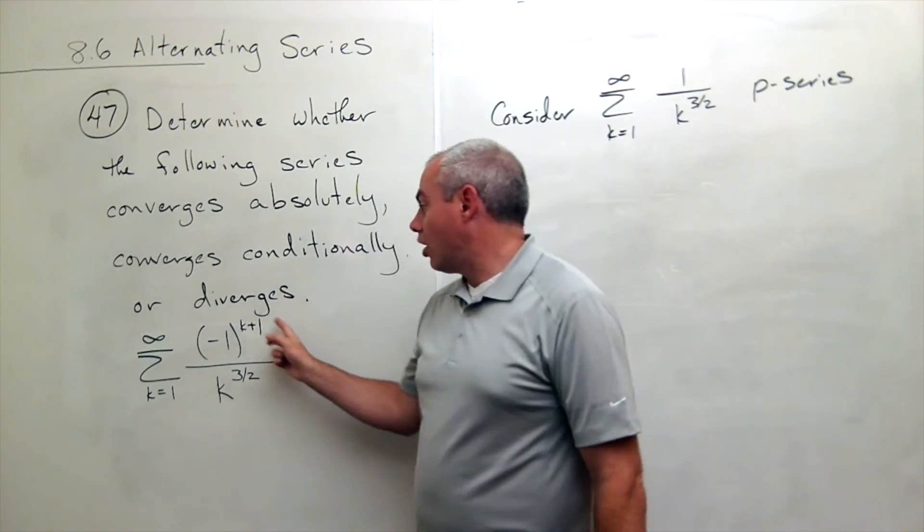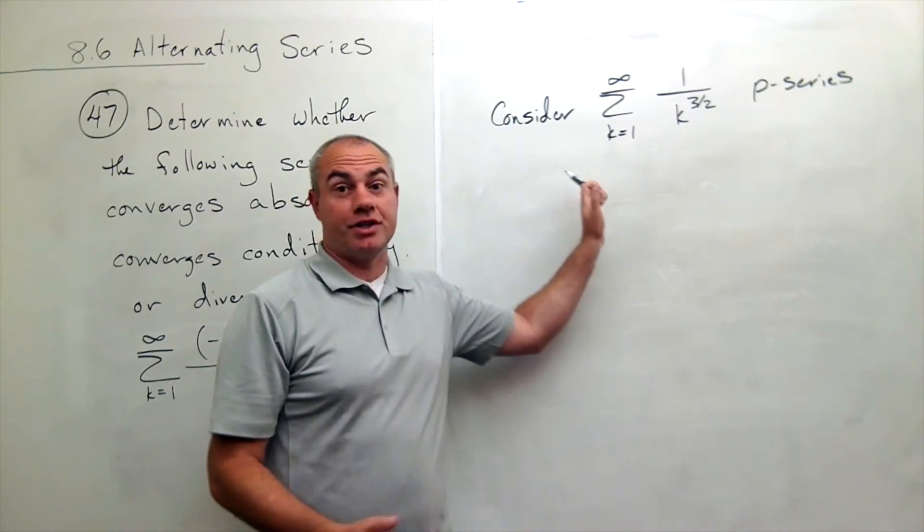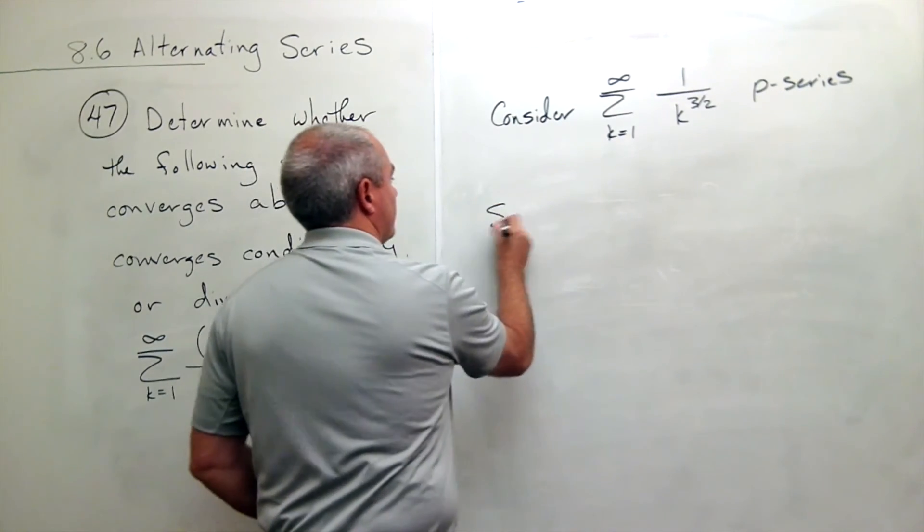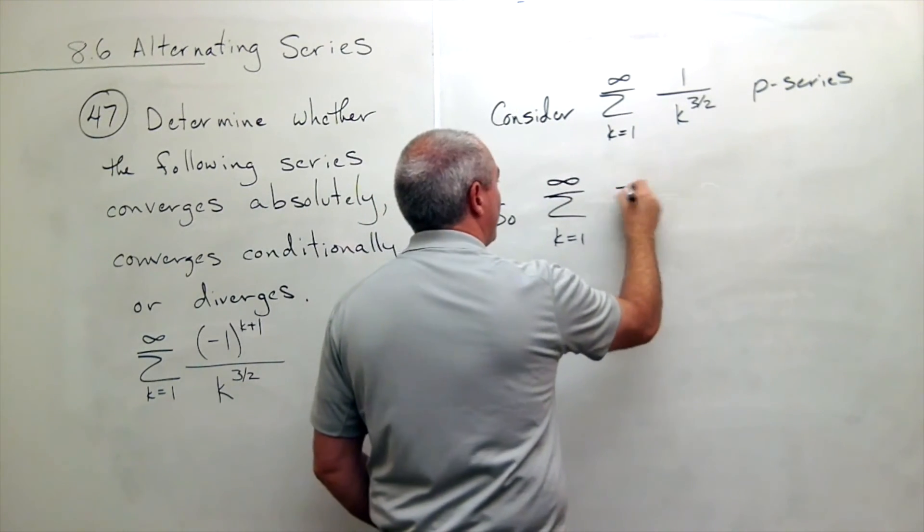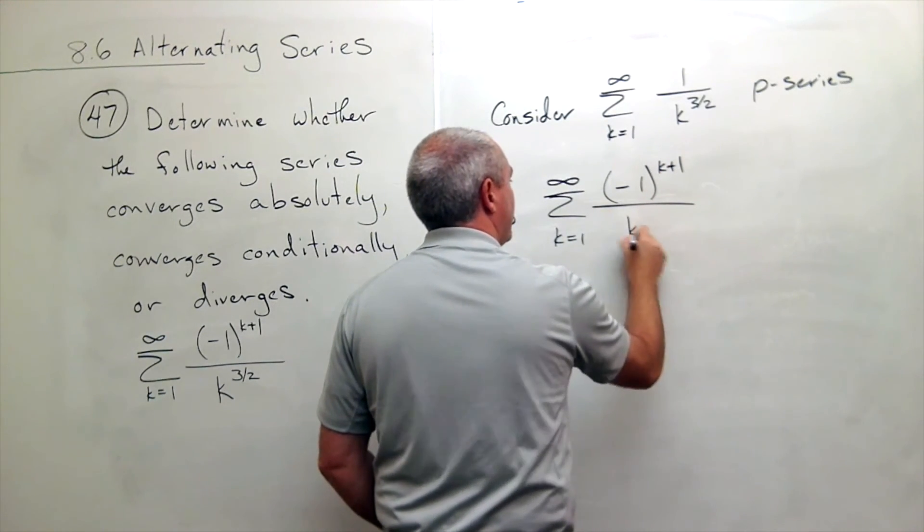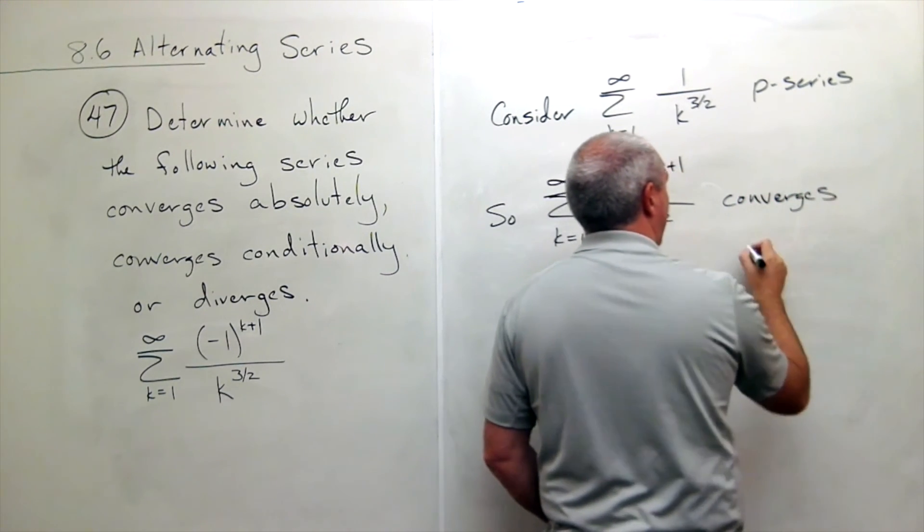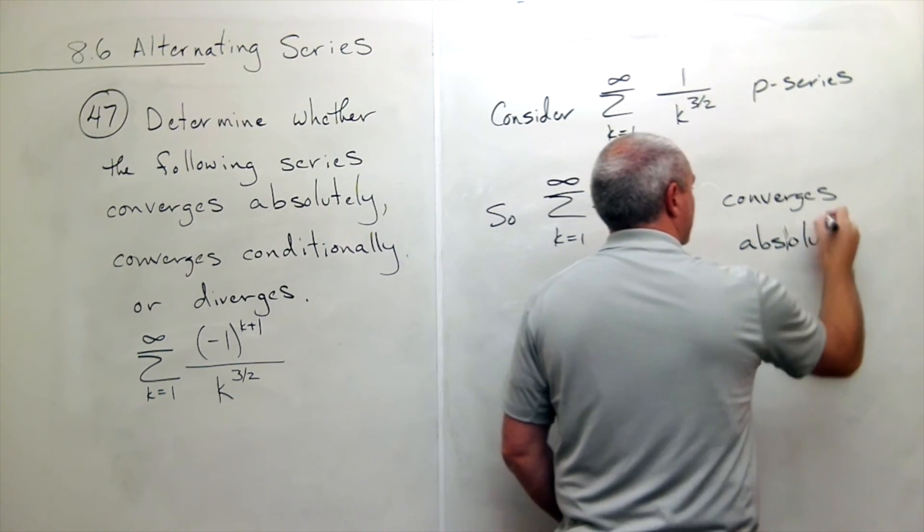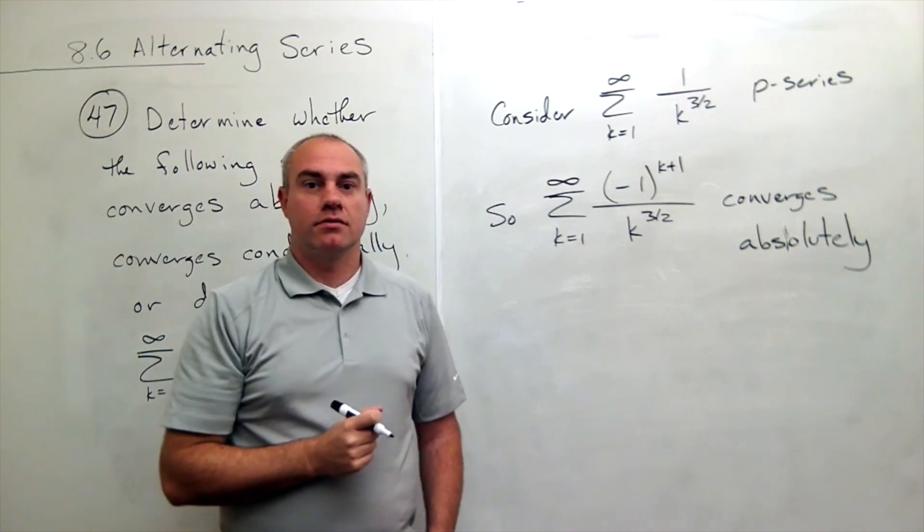So if all of the negatives on this thing are turned into positives, it converges. That's what we call converging absolutely. So we can say that the sum k going from one to infinity of negative one to the k plus one over k to the three over two converges absolutely. And we are done.